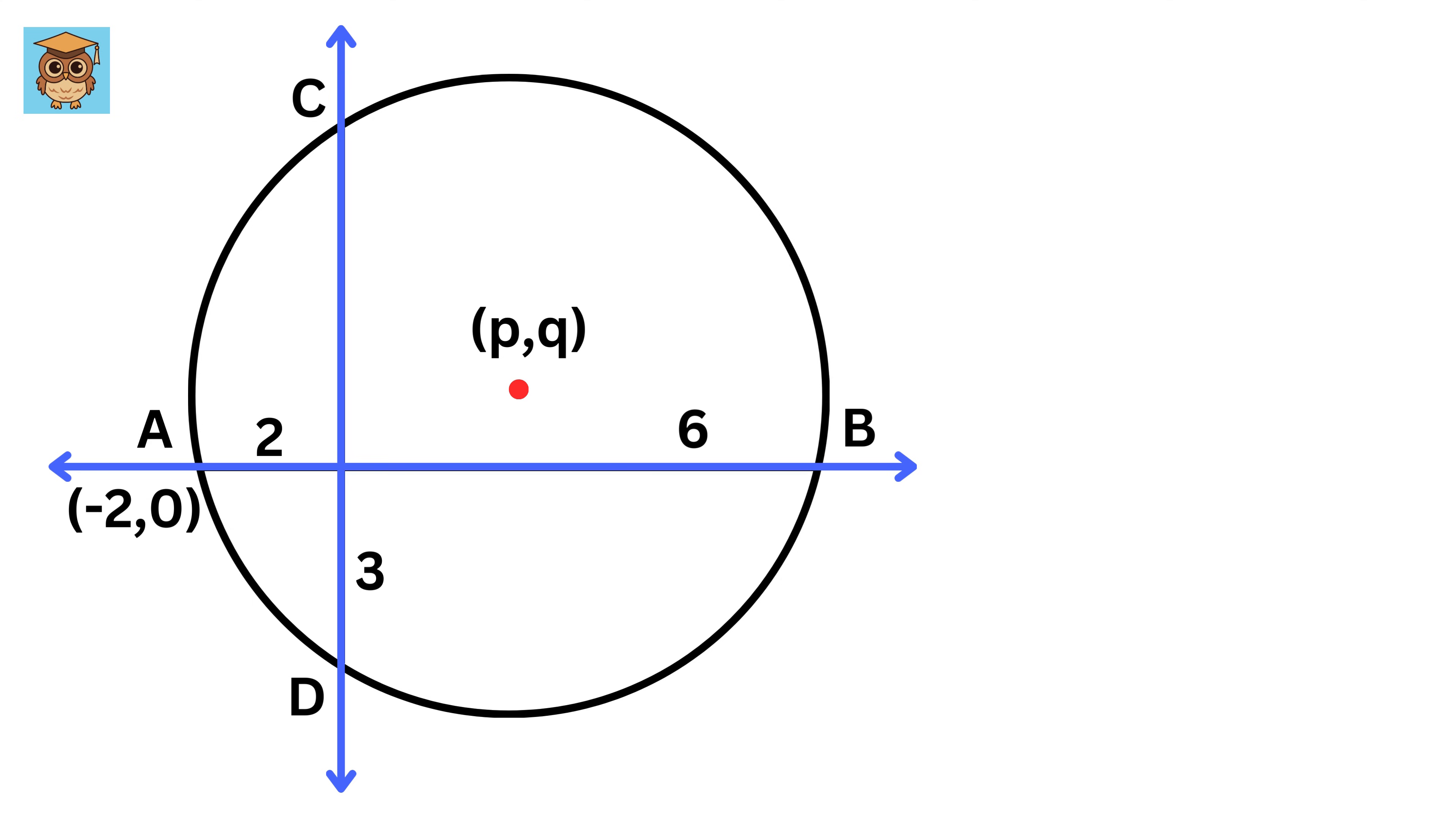Point A is at negative 2,0. Point B is at 6,0. Point D is at 0, negative 3.